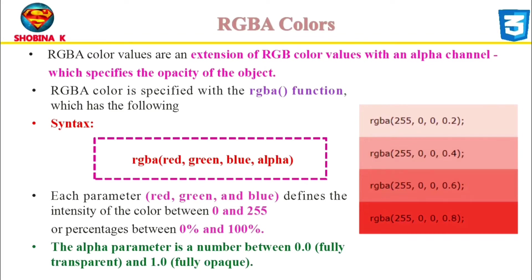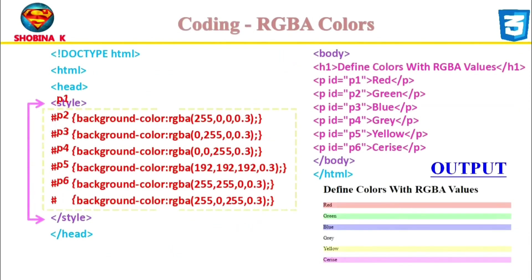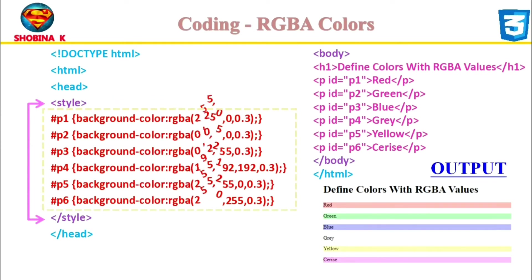The RGBA value is provided as a comma-separated list of four values representing red, green, blue, and alpha channels respectively. The first three values — red, green, and blue — can be either integers or percentages. The integer value 255 corresponds to the percentage value of 100%. The alpha channel value should be in the range of 0 to 1, where 0 is fully transparent and 1 is fully opaque. The example given here defines different RGBA colors, and you can see all the paragraph elements are partially transparent with their alpha values.